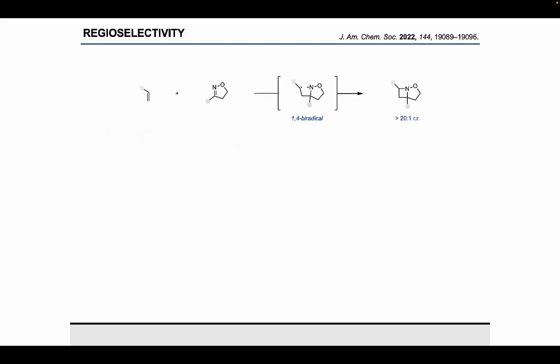Something that we were aware of though at the time was that this intermolecular 2-plus-2 reaction has an inherent regioselectivity associated with it. You react through this 1,4 bi-radical, and you're always going to get substitution next to the nitrogen when using a terminal alkene like this. If you try to think about how to get substitution at the position across from the nitrogen, that's something that just can't be done through an intermolecular approach.